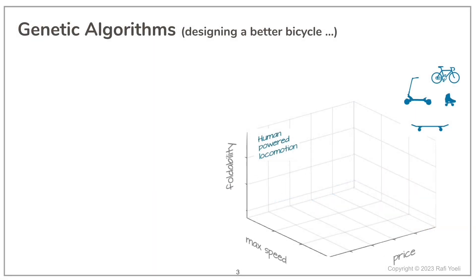Assume for a moment that our problem domain is that of human-powered terrestrial locomotion, such as bicycles, scooters, rollerblades and so forth. The three product parameters that we chose to show here, out of many, are speed, foldability and price.